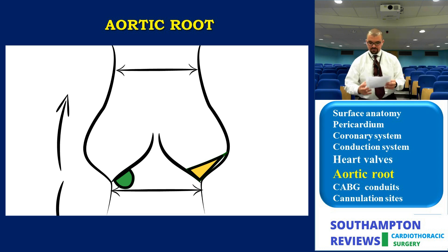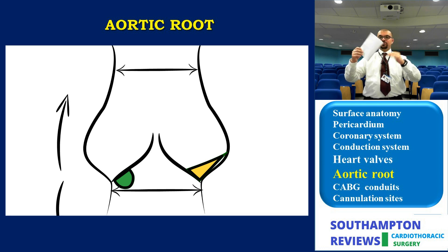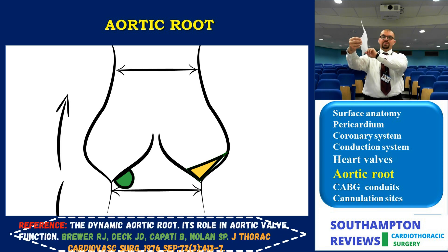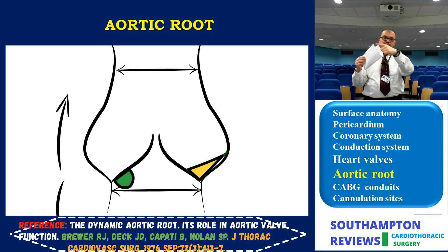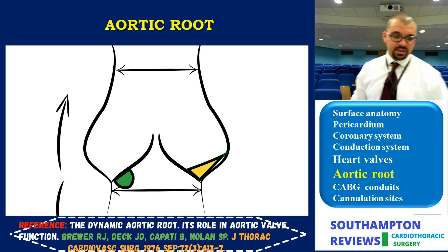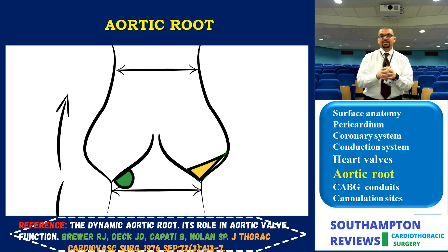The commissures being attached to the sinotubular junction has another important function. The valve opens to allow blood to flow from the left ventricle to the aorta, but there is an additional movement: when blood reaches the sinotubular junction it dilates it, bringing apart the commissures. This causes loss of the parabolic or U-shape of the valve leaflets during systole. This lateral opening accounts for a 15 percent increase in effective orifice area, allowing unobstructed flow of blood from the left ventricle to the aorta.